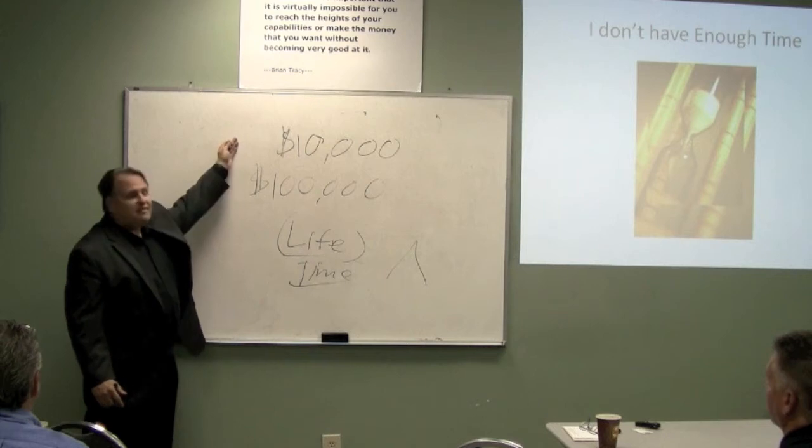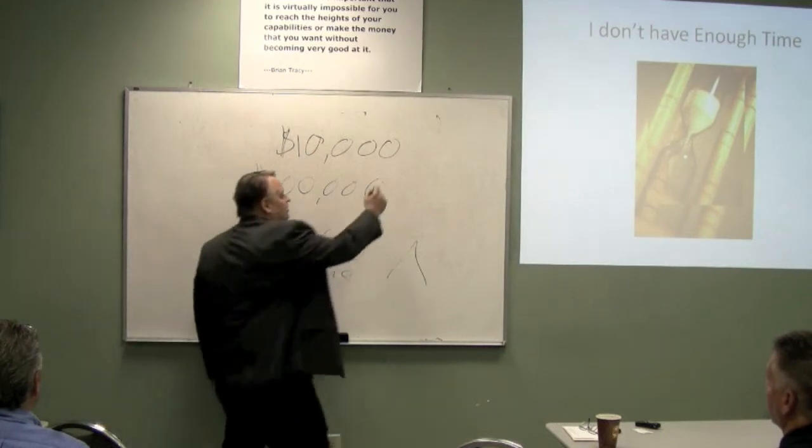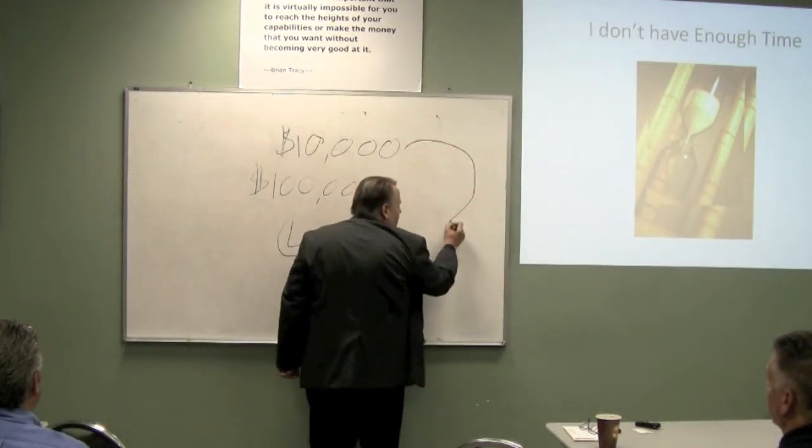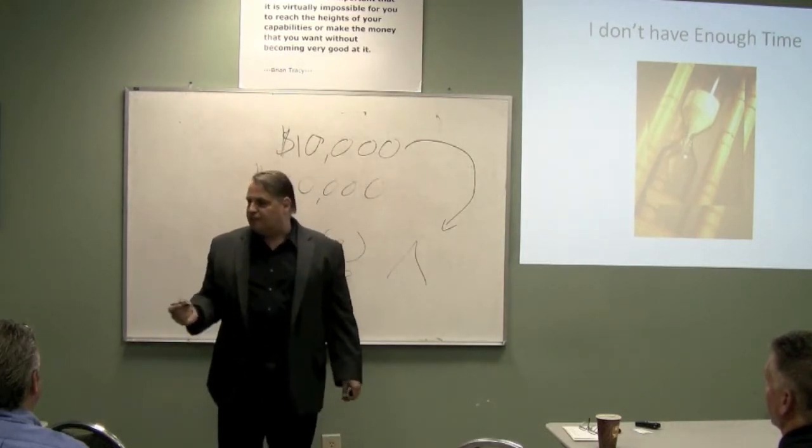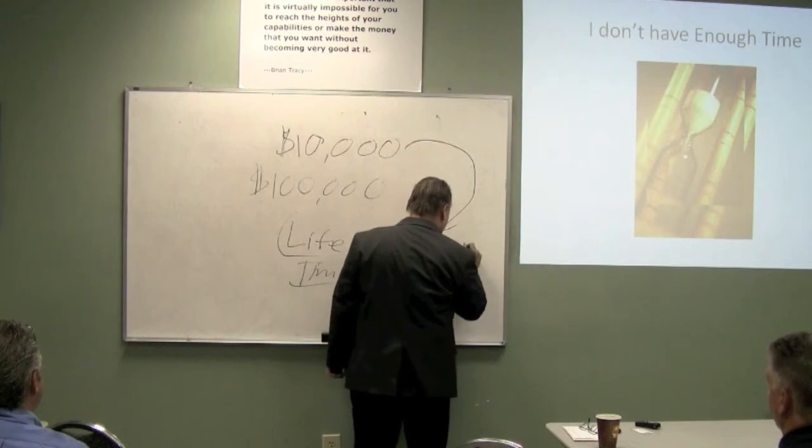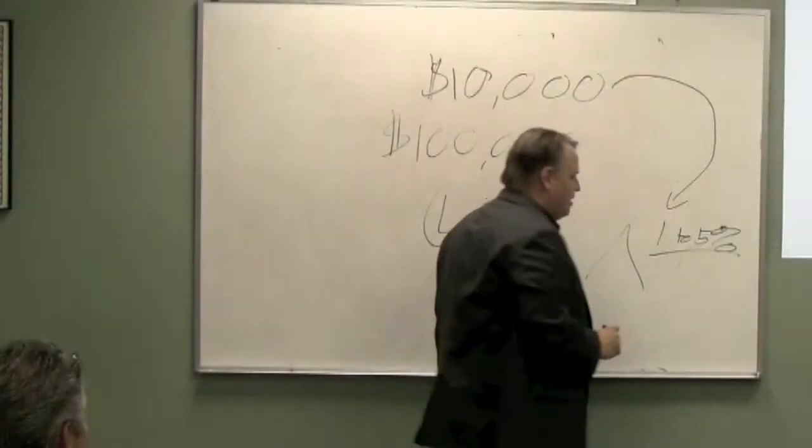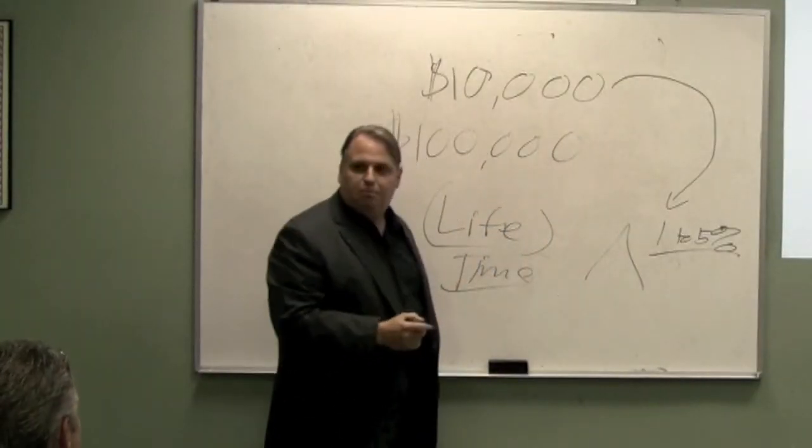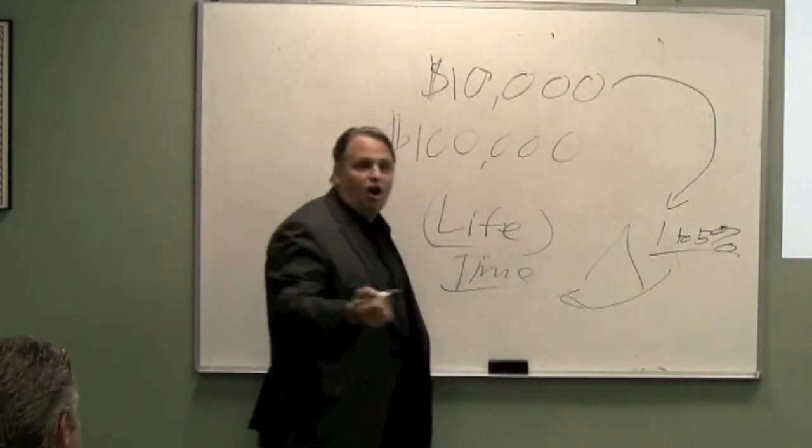And then after we made this $10,000, we'd get a number of people that would come in, and it would be what? 1% to 5% sometimes? Does this sound familiar? 1% to 5%.